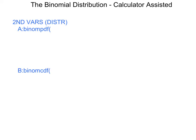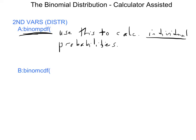PDF is the one that you use to calculate individual probabilities. So if you had a question where you were rolling a die seven times, and you wanted to know the probability of getting exactly five successes, you would use binom PDF. So you use PDF if you're doing an individual probability. Binom PDF basically does the formula that you learned in the last video.